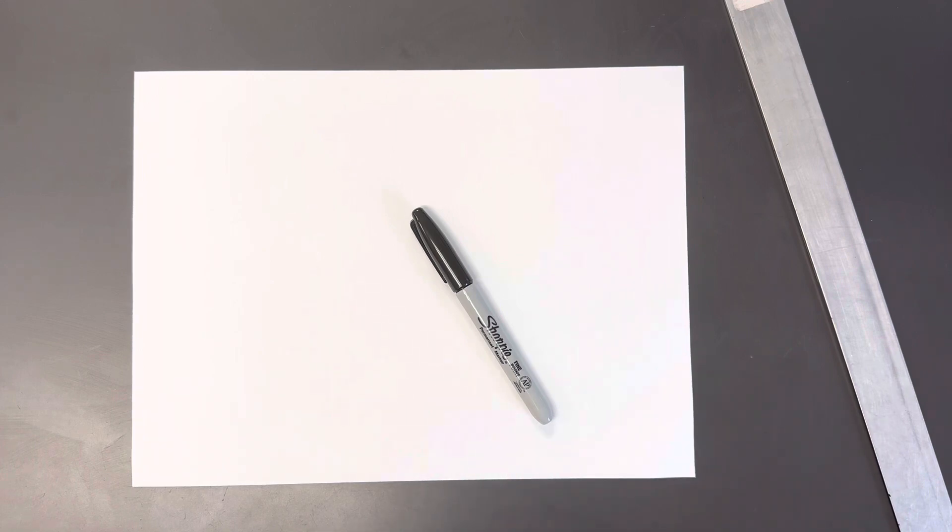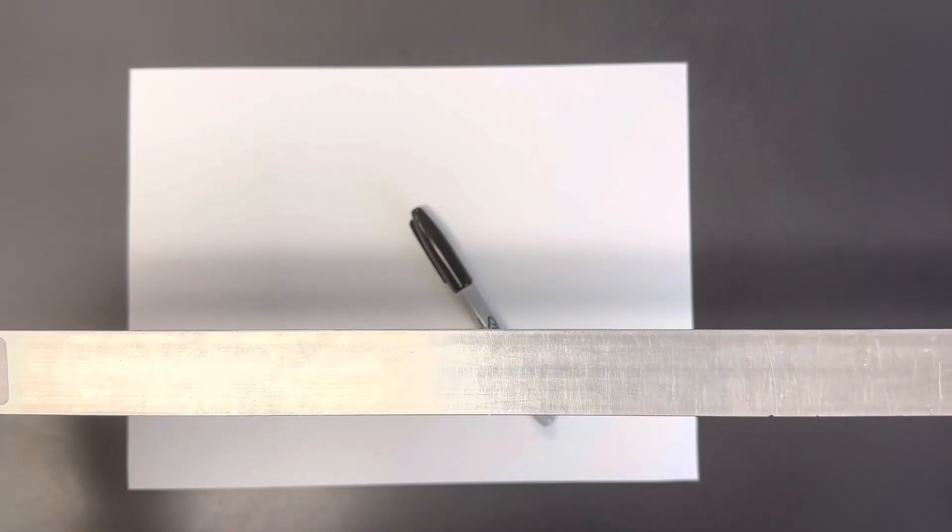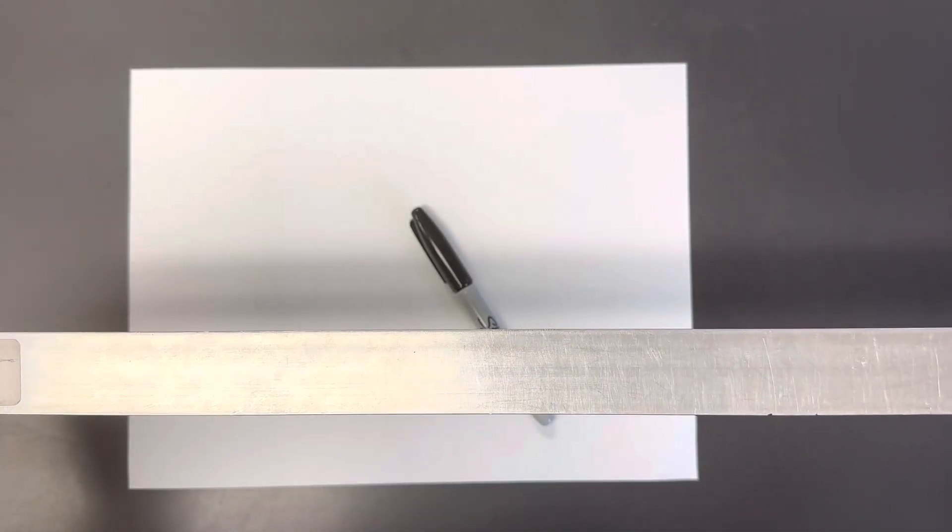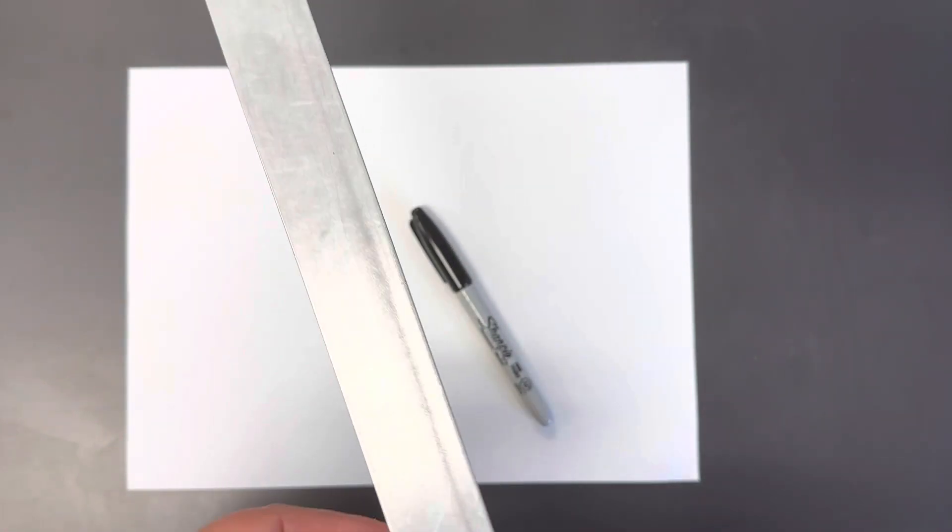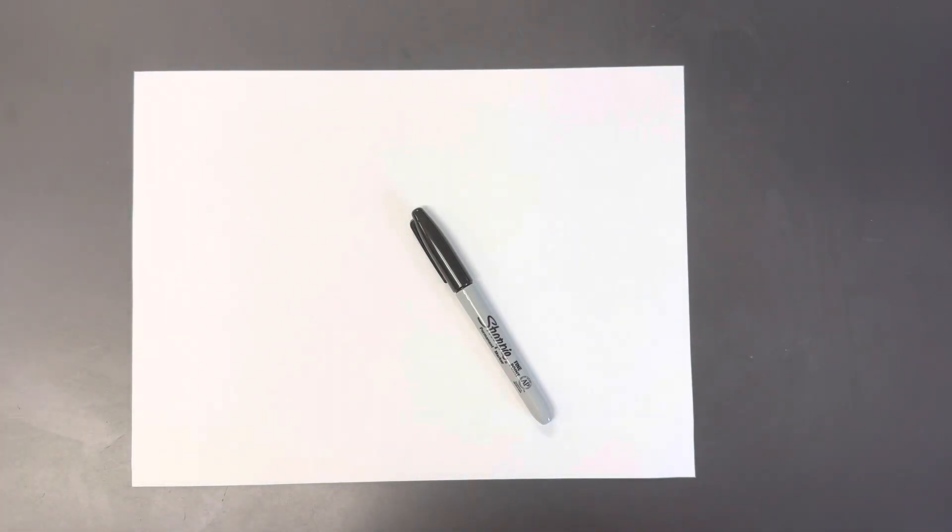Generally with perspective drawing all of your lines are either going to be horizontal, which means it goes straight side to side, vertical, which means it goes straight up and down, or diagonal. Usually if it's diagonal it's going to go to the vanishing point.